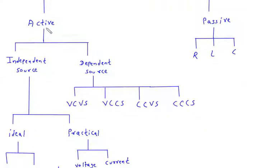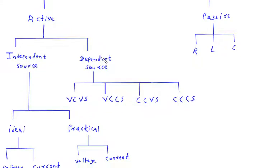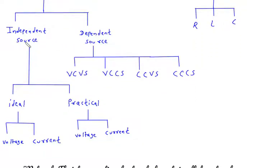Active elements are classified as independent sources and dependent sources. Independent sources are classified as ideal and practical. Dependent sources are classified as voltage control voltage source, voltage control current source, current control voltage source, and current control current source.